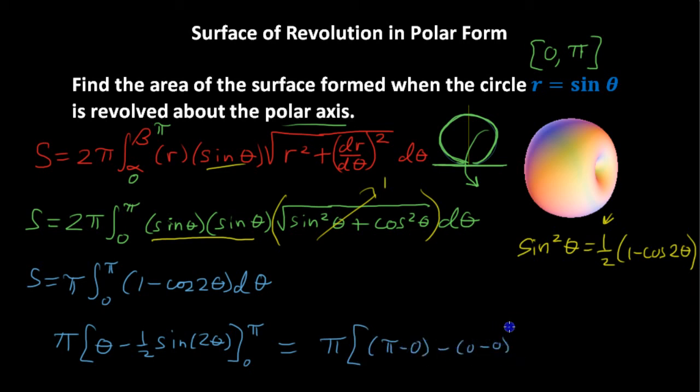So in the end, what we have, shifting back to green for our initial problem here, is an area of surface of revolution of pi squared. That is weird.